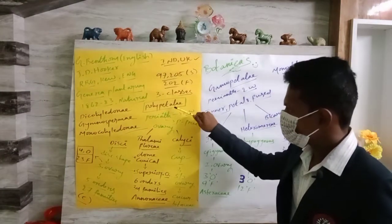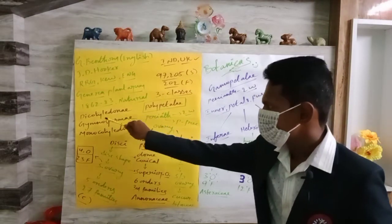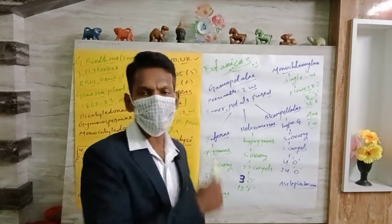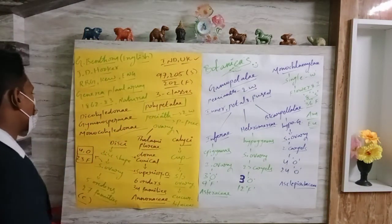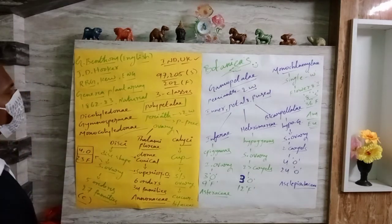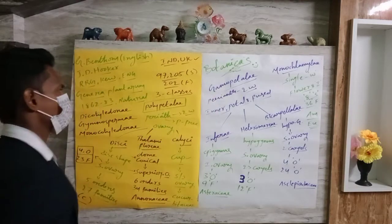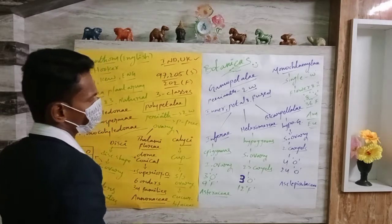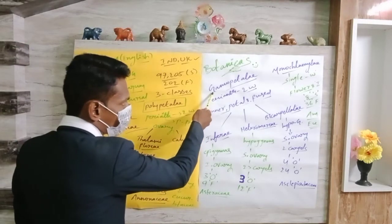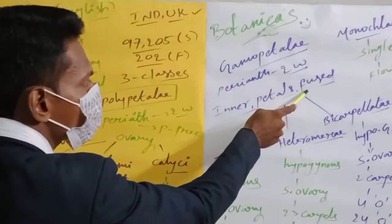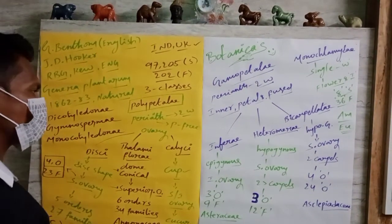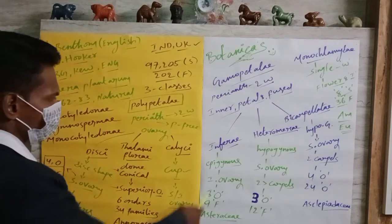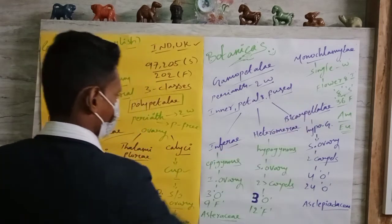These three series come under subclass Polypetalae, which comes under class Dicotyledone. Dicots are characterized by two seed leaves, reticulate venation, taproot system, and trimerous or pentamerous flowers. The next subclass is Gamopetalae, where petals are fused. Based on the ovary arrangement, Gamopetalae is subdivided into three series: Inferae, Heteromerae, and Bicarpellatae.